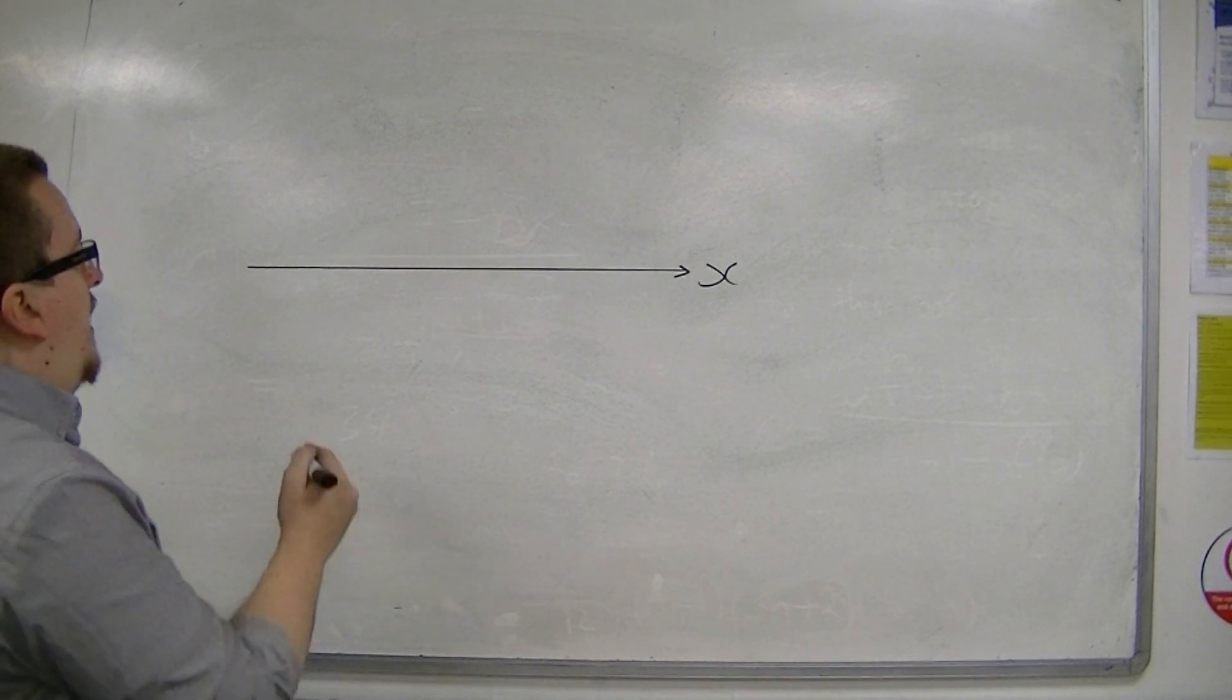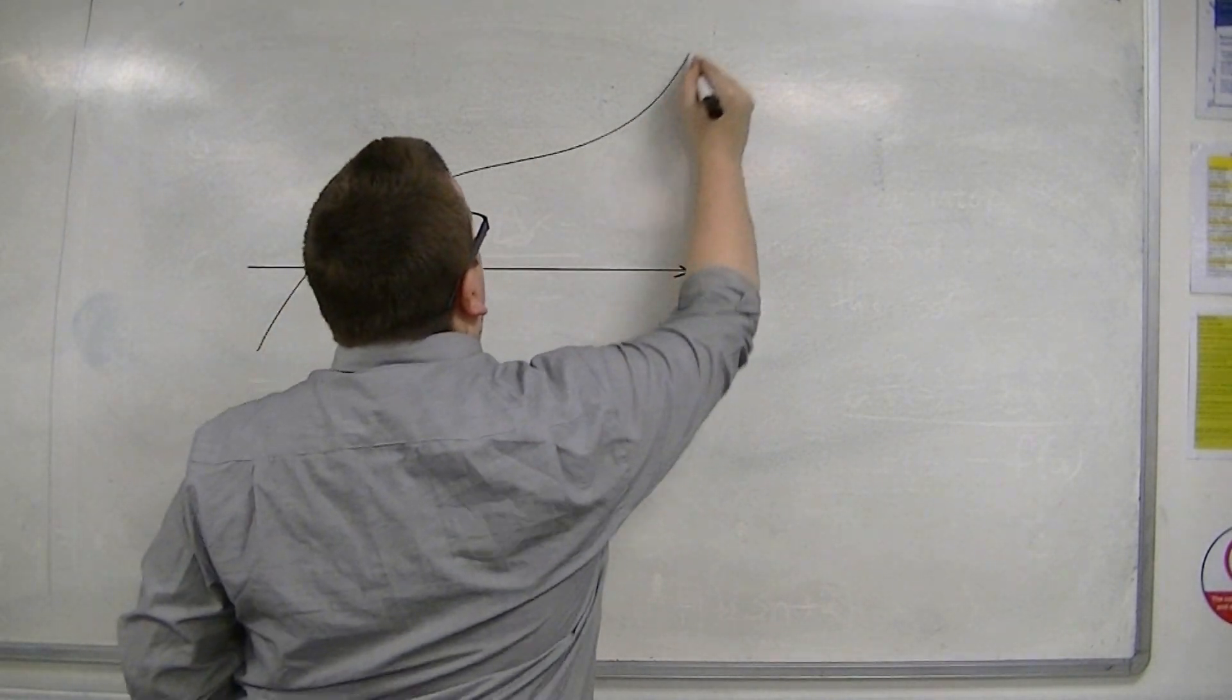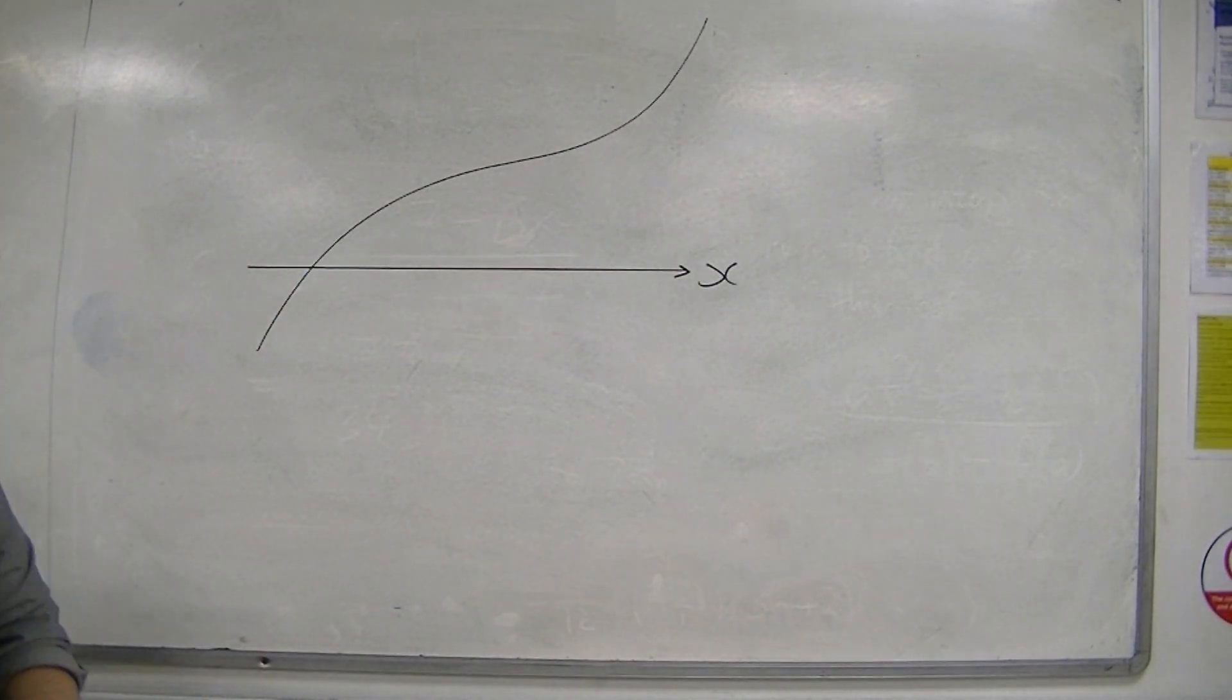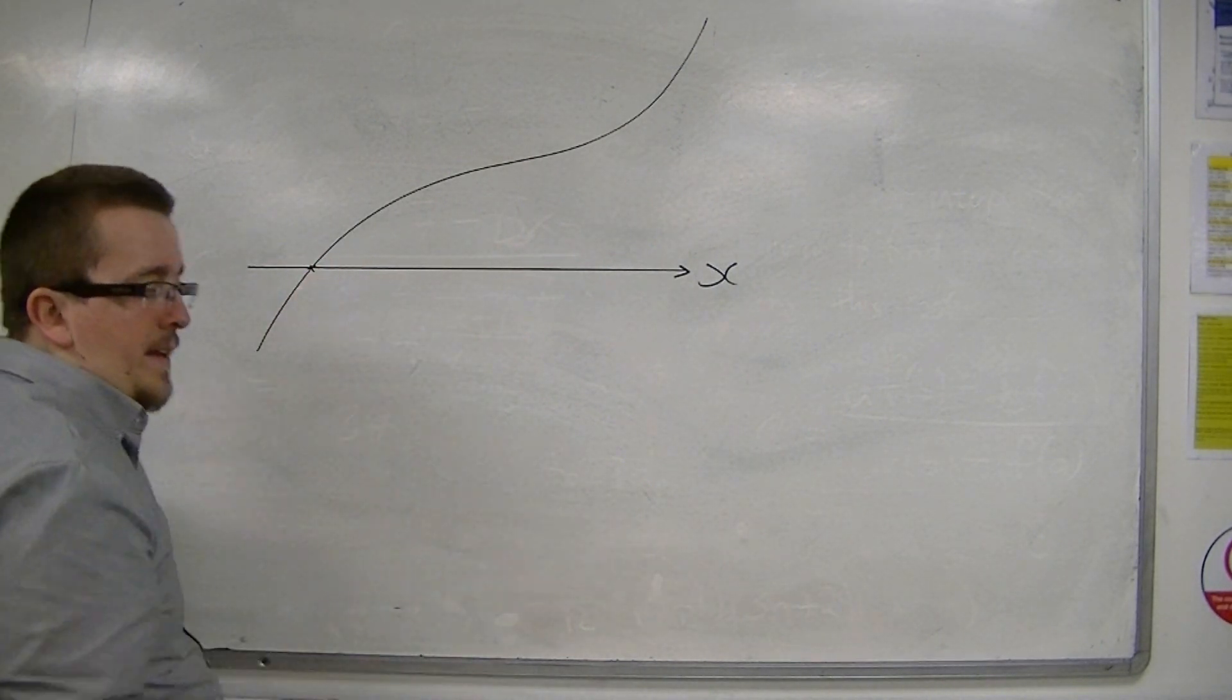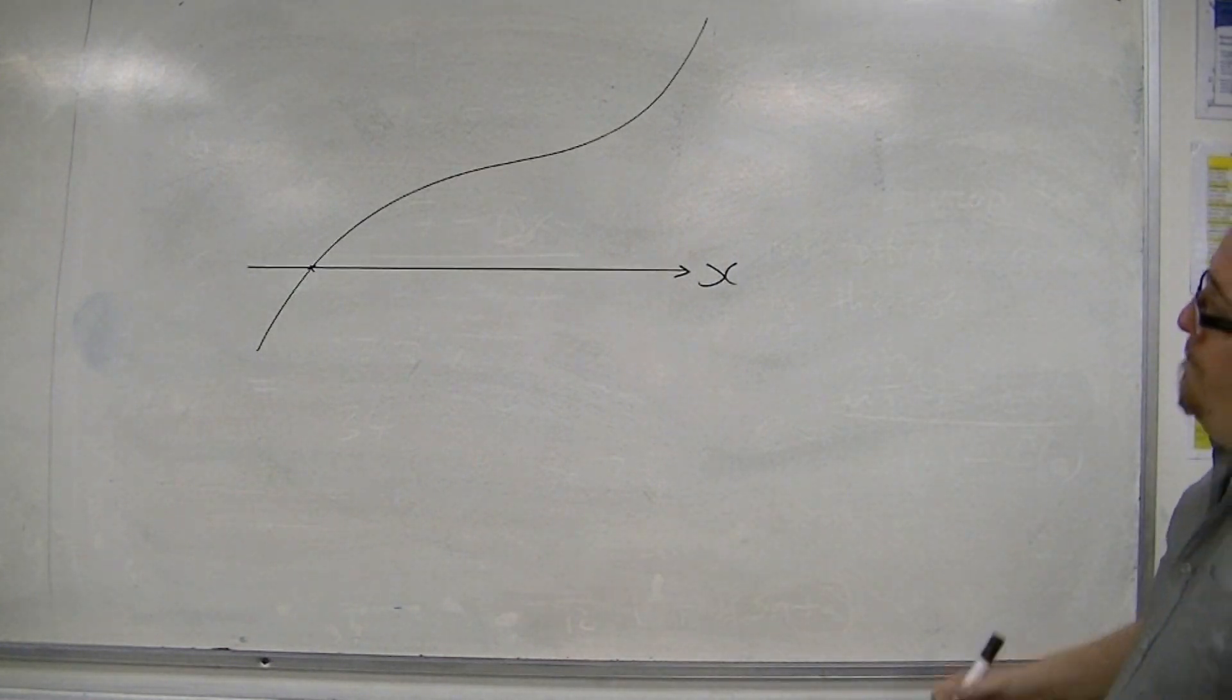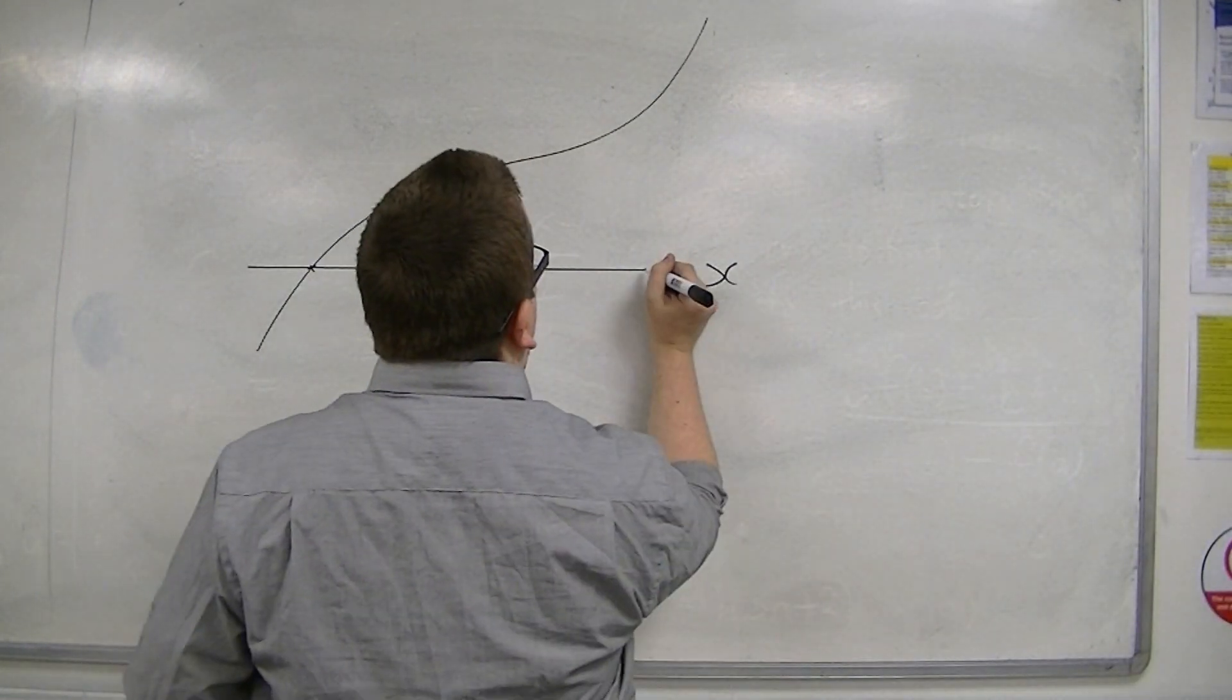So let's say we've got here's our x-axis, and we've got a curve that looks something like this. And this is the root that I'm trying to find here. Now, let's say we're looking at a particular point, P.